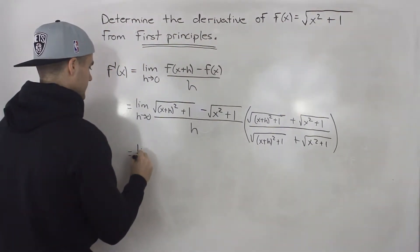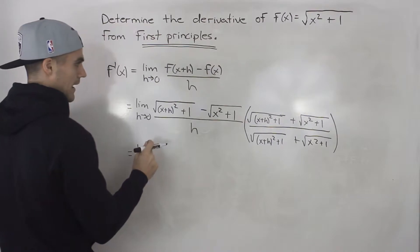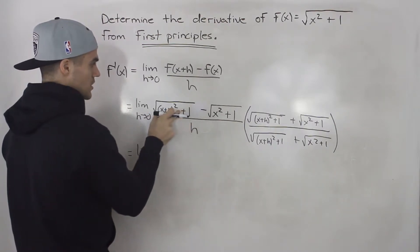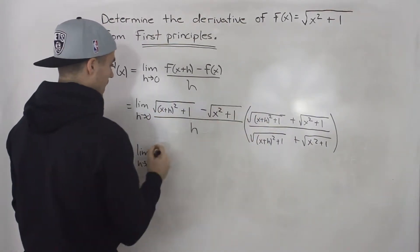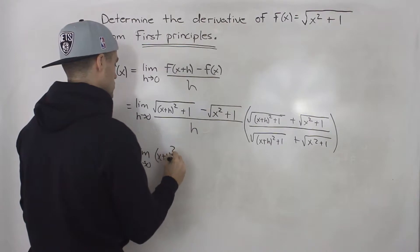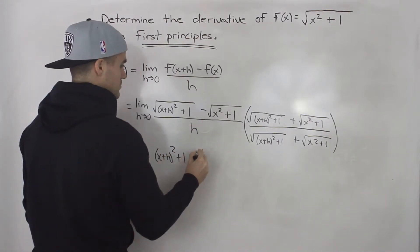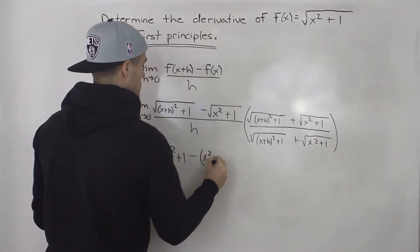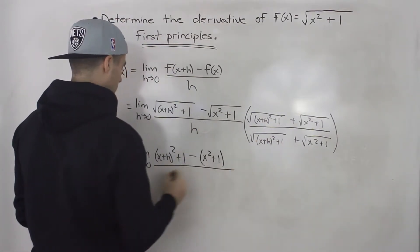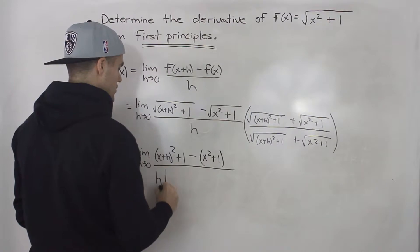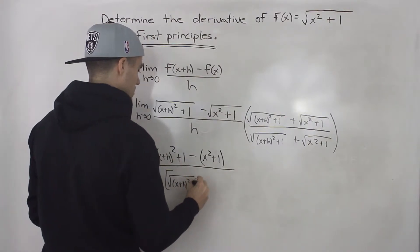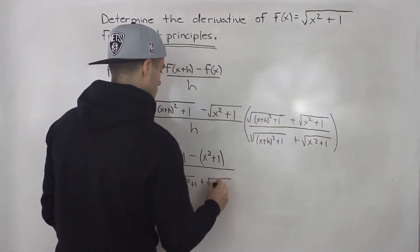These two will form a difference of squares, so you just multiply the end terms by themselves. This term multiplied by that term — since they're the same, the square roots just go away — giving us x plus h squared plus one. Then subtracting this term multiplied by that term, which is just x squared plus one. All over the denominator, which we keep separate: h times the square root of x plus h squared plus one, plus the square root of x squared plus one.